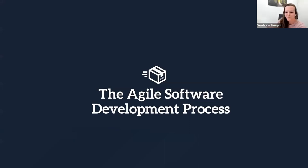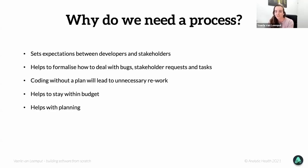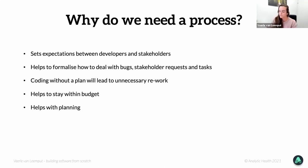So let's start with the agile software development process. How do you build software using a user-centric approach? The first question is: why do we need a process at all? We can just jump in, start coding and build features, right? But a process helps you align expectations between developers and stakeholders or users. It also helps formalize how to deal with new requests, bugs, or new tasks. If you have a process in place, it prevents unnecessary rework and helps you stay within budget.